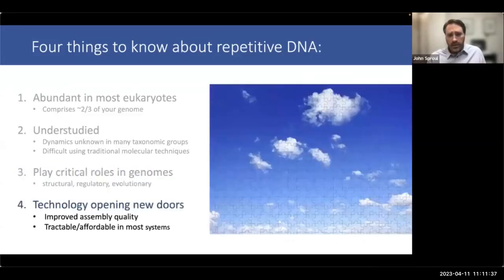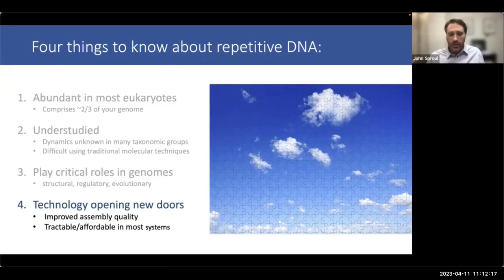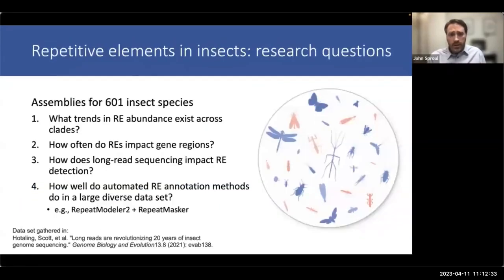Technology is opening new doors for studying repetitive elements. We're seeing dramatic improvements in assembly quality with highly accurate long reads and increasing read length, and this quality is becoming more tractable and affordable. It's an exciting time to potentially have very high quality, sometimes chromosome-level resolved assemblies in which we can study repetitive elements in their genomic context. Our ability to understand complete stories of genome evolution will hinge on our ability to consider complete genomes, including repetitive sequences.